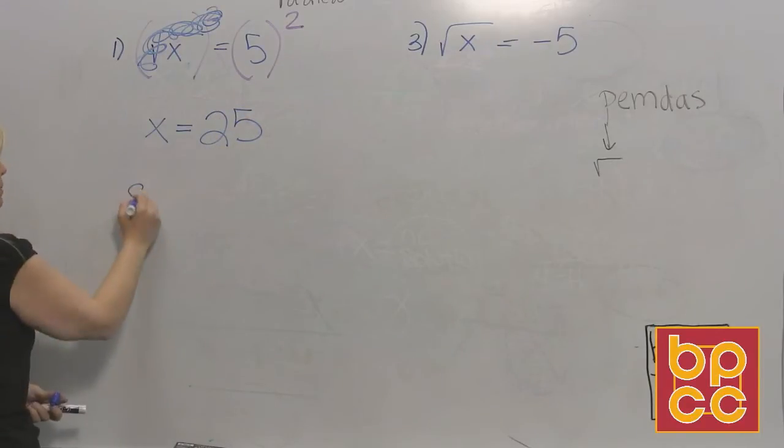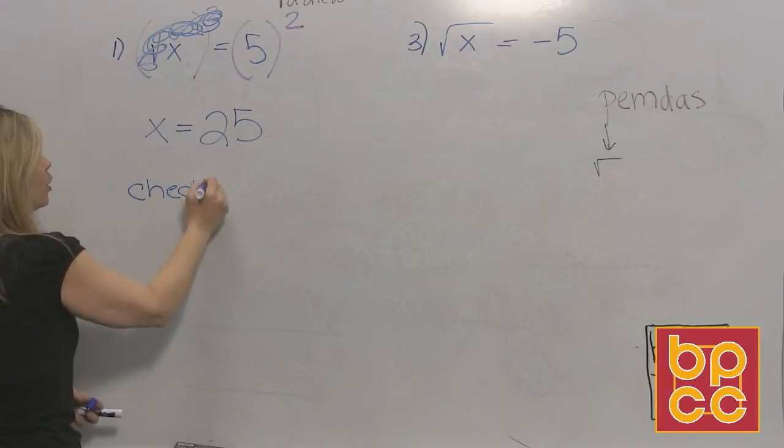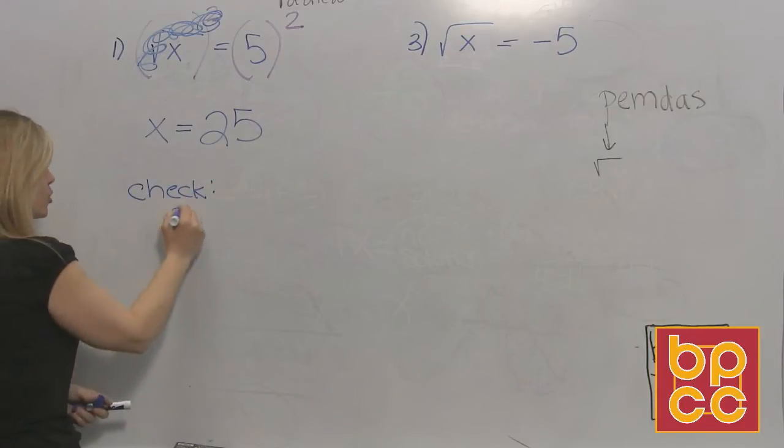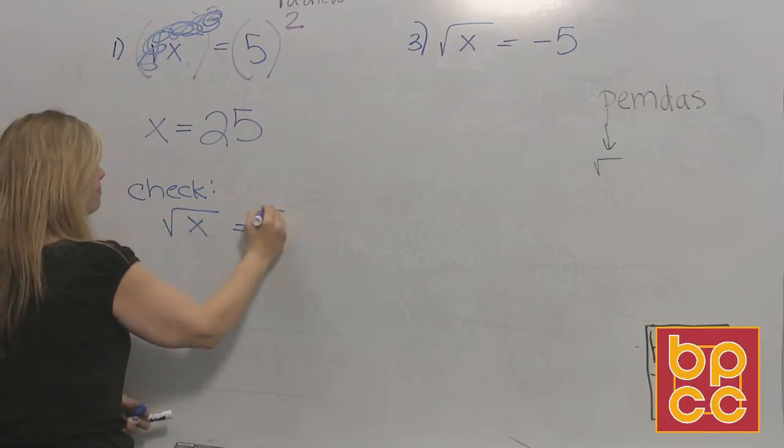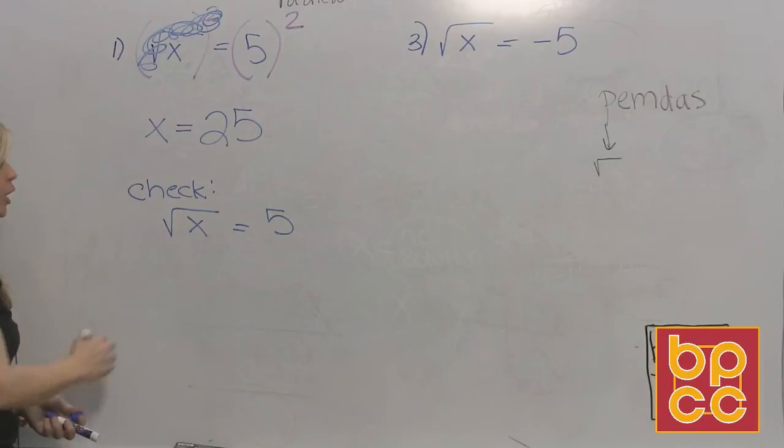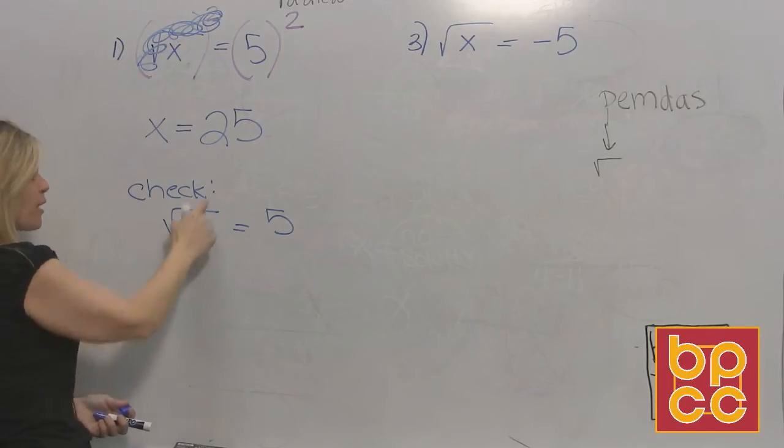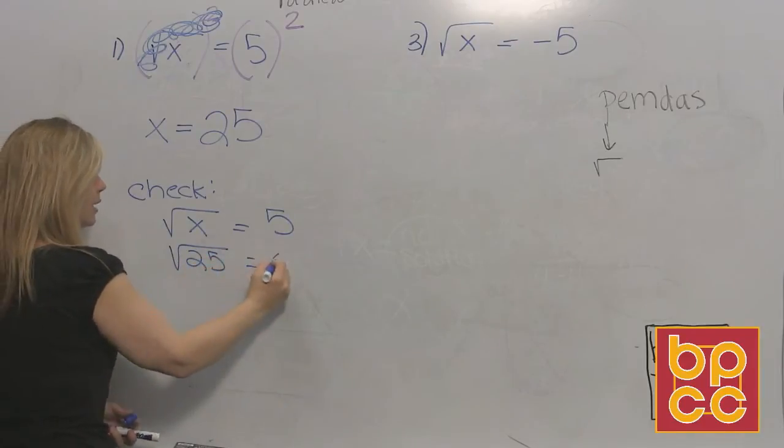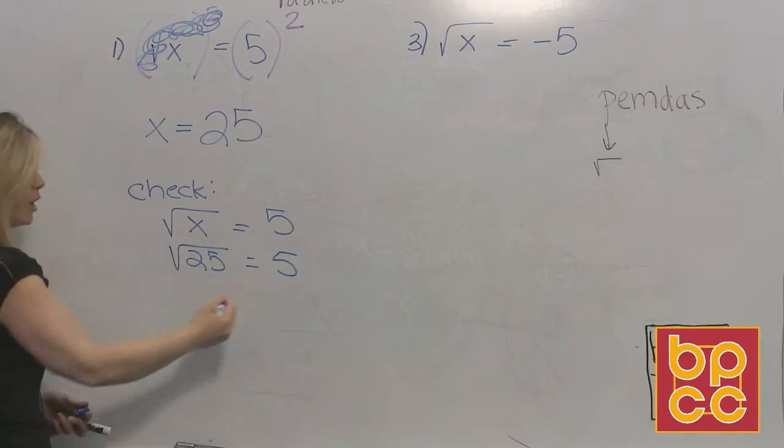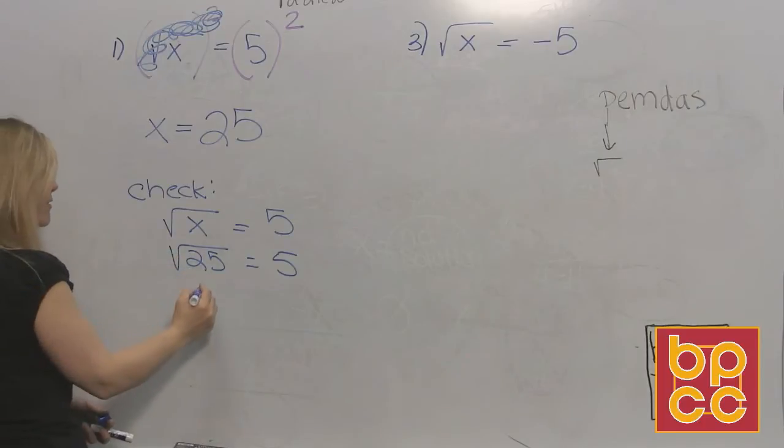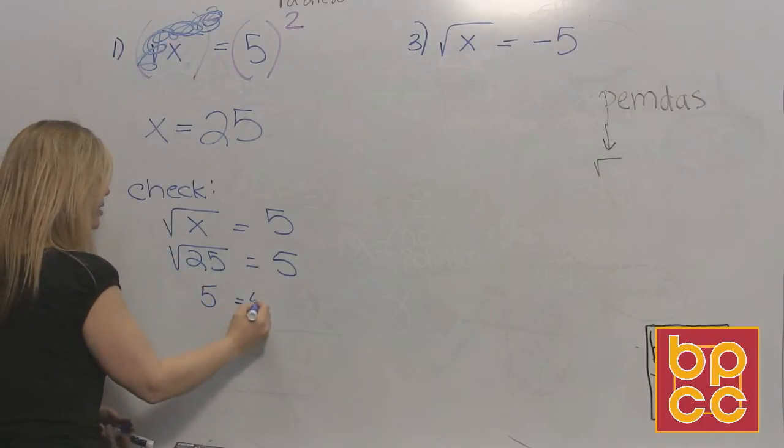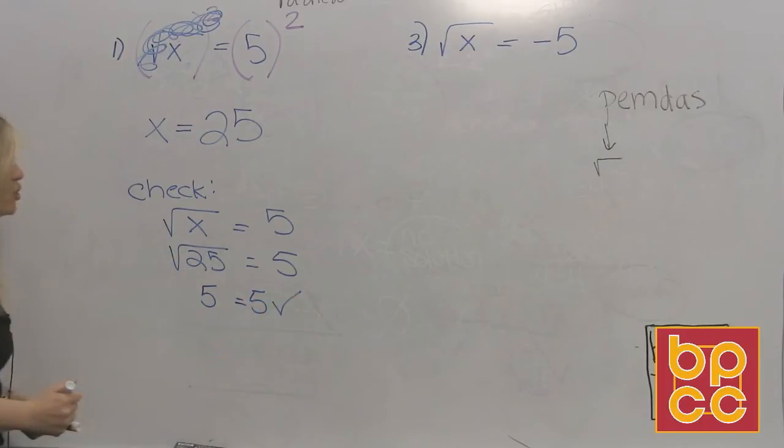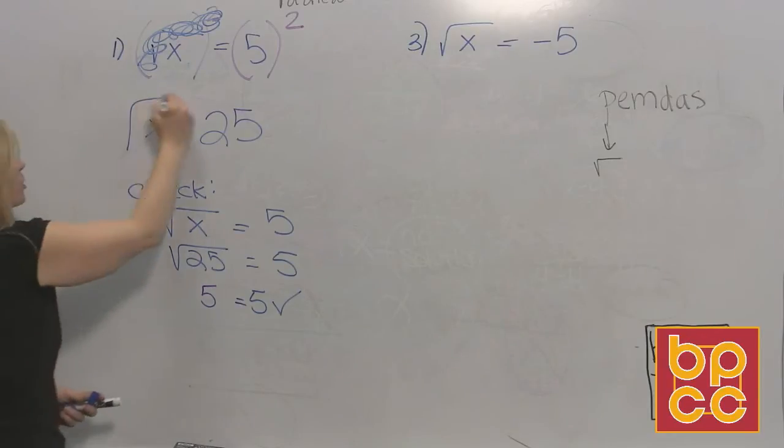Just like we've talked about, if you solve it you better check it. So you write the original. That was the original. You replace, you substitute for X the number you got, 25. When you check it's all numbers. So all you do is work it. What is the square root of 25? 5. Does 5 equal 5? It checks. This is our solution.